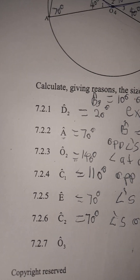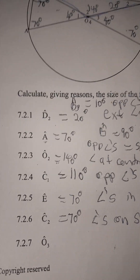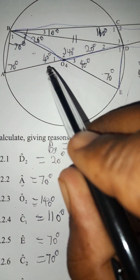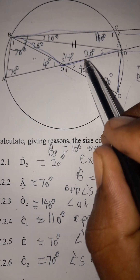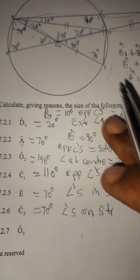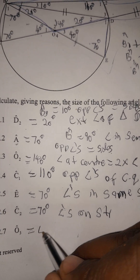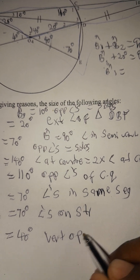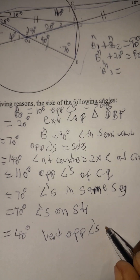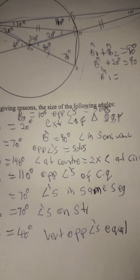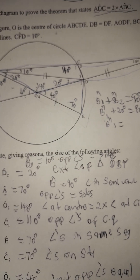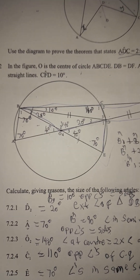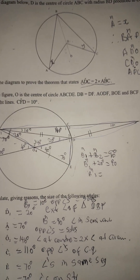For angle O3: we already calculated that angle O1 equals angle O3. That makes it 40 degrees. The reason: vertical opposite angles are equal. Remember your straight lines and also differentiate from parallel lines.